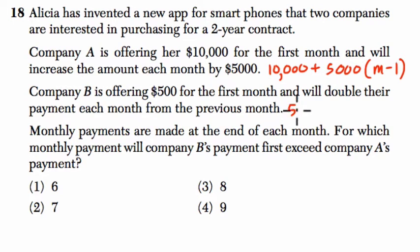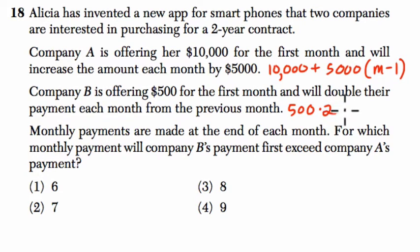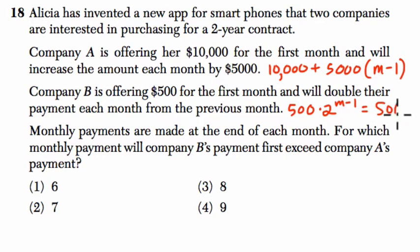Company B is offering $500 for the first month and will double their payment each month from the previous month. So for the first month it's $500. For the second month it's going to be $1,000 — they multiply it by 2. For the third month, they multiply by 2 and then by 2 again. So that's 500 times 2 to the (m minus 1). For the second month, you plug in 2 for your exponent: 2 minus 1 gives 500 times 2 to the 1, which is $1,000 — that's how much you would get that second month.